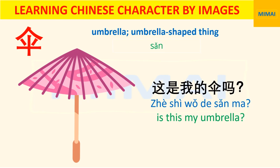Here is an example for this word. Is this my umbrella? 这是我的伞吗?